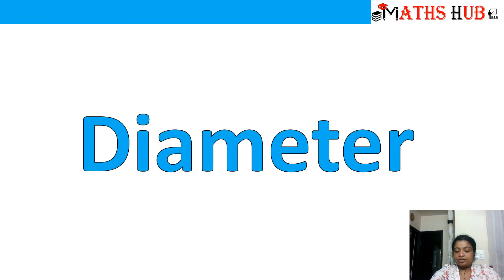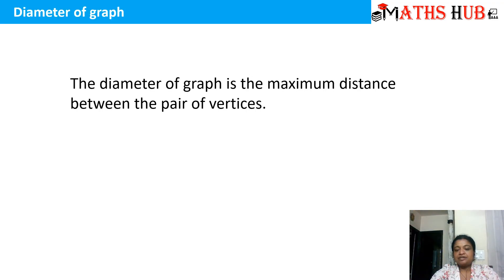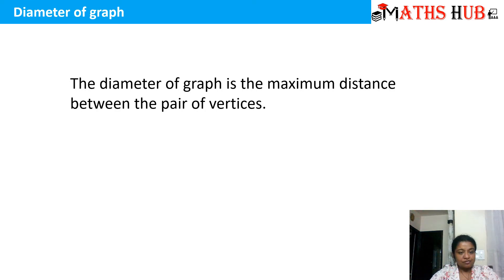Now let's talk about diameter. Diameter is defined as the maximum distance between any pair of two vertices. So the diameter of the graph tells us, between any two pair of vertices, what will be the maximum distance. To calculate the diameter of a graph, we calculate the eccentricity of all the vertices present in the graph, and from the list of all eccentricities we choose the maximum — that becomes the diameter.